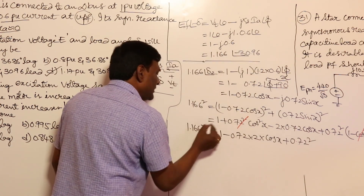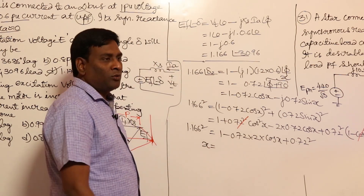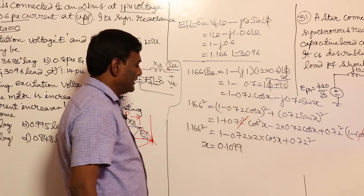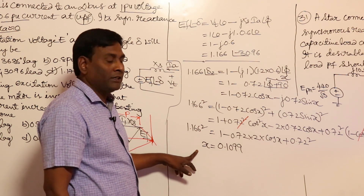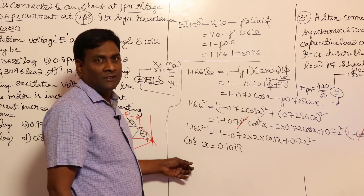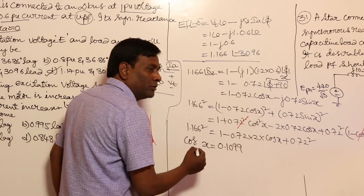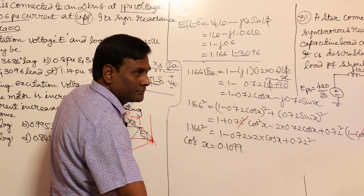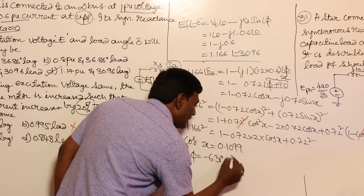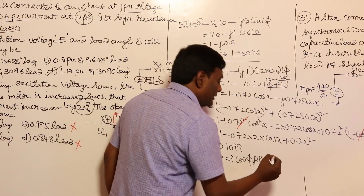Calculate x: cos(x) = 0.1099. So x = cos⁻¹(0.1099), then phi = x − 90. That value comes to minus 6.31 degrees. So cos(phi) — that is the power factor — is going to be 0.994 lag.